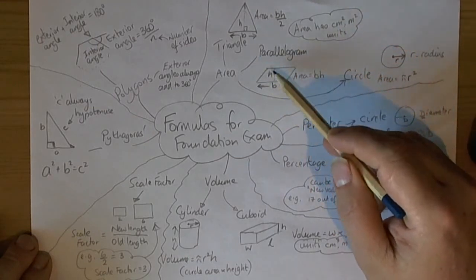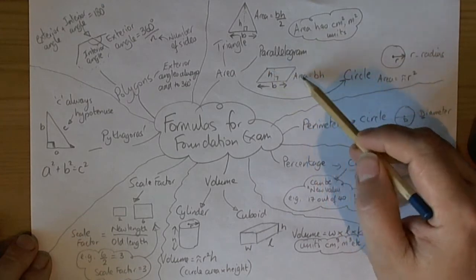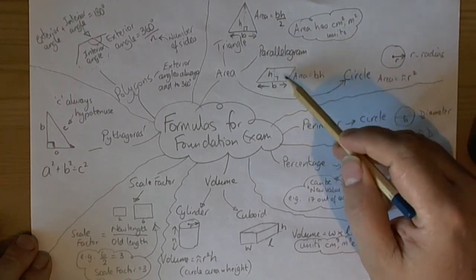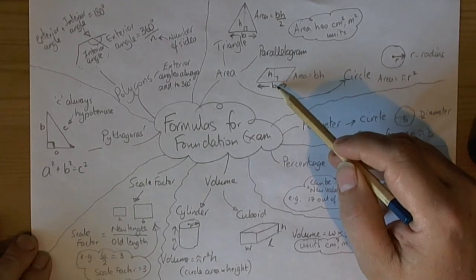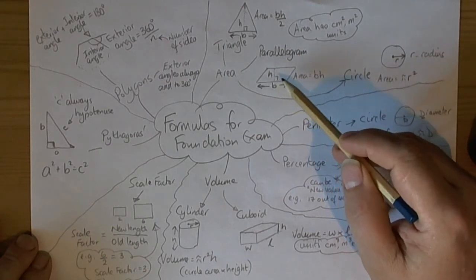A parallelogram is just a shifted-over rectangle. So rectangle is base times height, and parallelogram is base times height. Just remember that the height is measured at right angles.